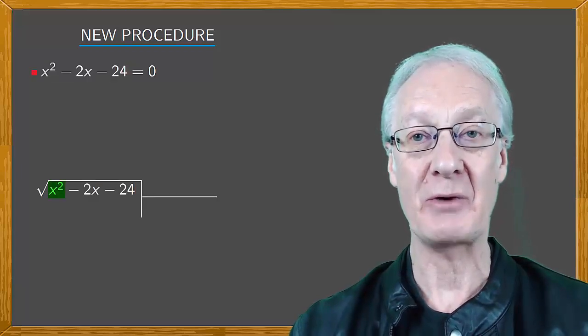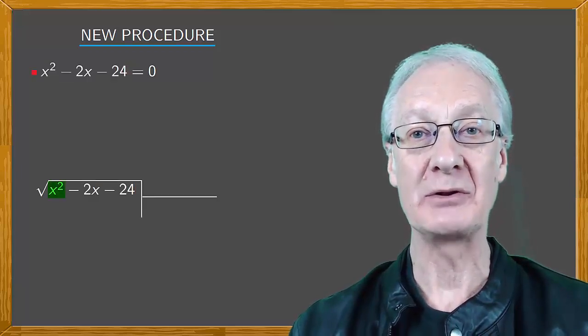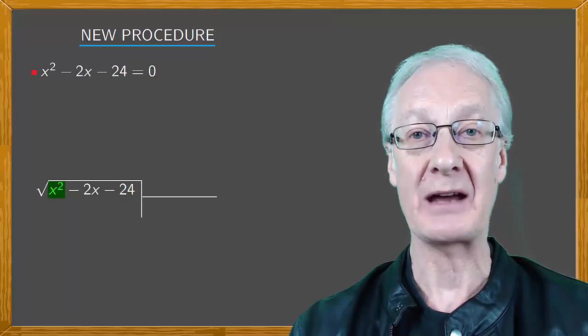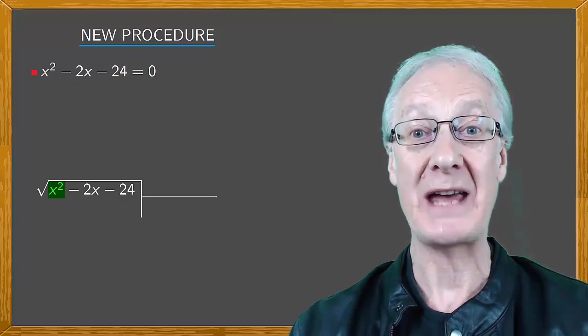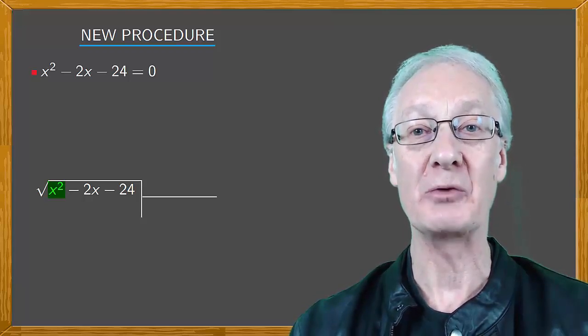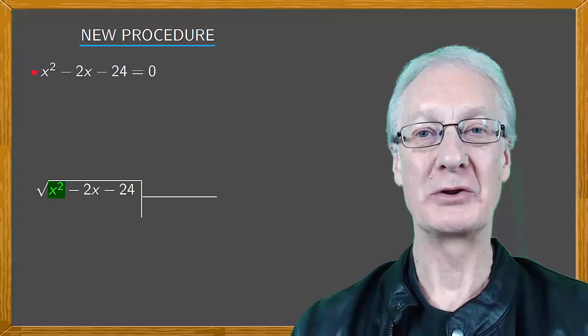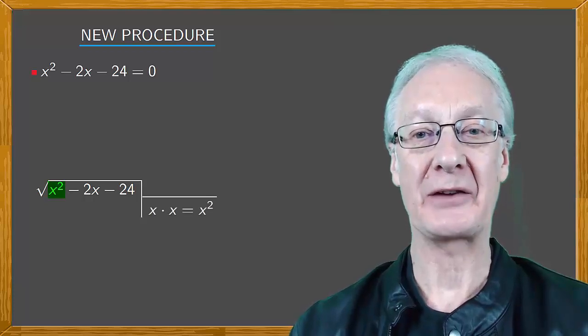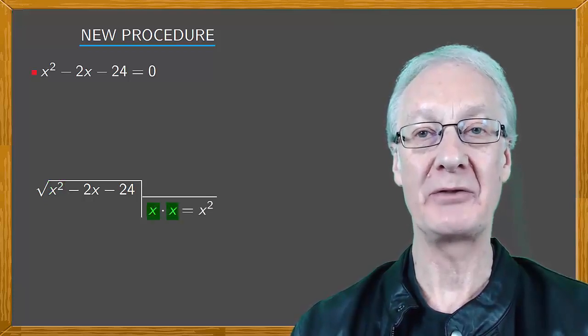Look at the first term, x squared, and think what is multiplied by itself to give x squared? Well, of course it's x. It could also be minus x, but taking the positive result makes the working simpler. We multiply x by x to give x squared, and so we put x above on the right-hand side.